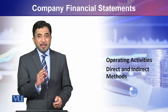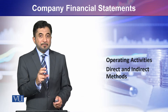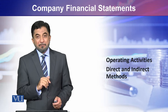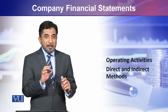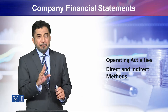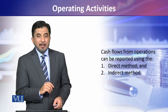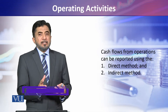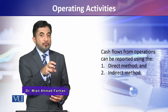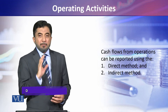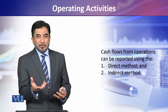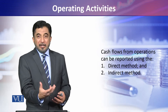Now we will see how we calculate cash flow for operating activity. Operating activity cash flow is calculated using two methods: the direct method or the indirect method. The direct method means we directly approach the cash inflow and cash outflow figures, while indirectly we use a via approach to reach the cash flow from operating figure.